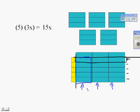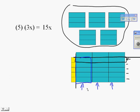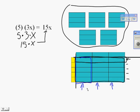So we can show it using the grouping model, using the area model, and we can show you how this works mathematically. What we have indicated here by the parentheses is that we're multiplying, and also the 3 right next to the x indicates multiplying. Multiplying from left to right: 5 times 3 is 15, times x, and there's my 15x.